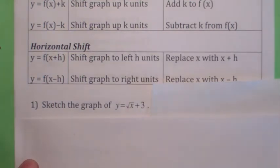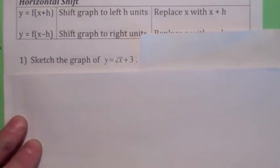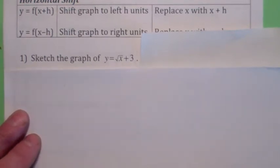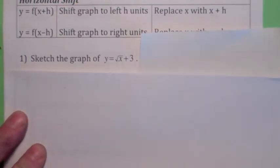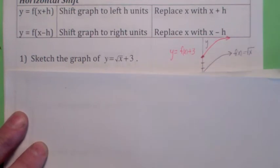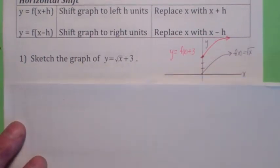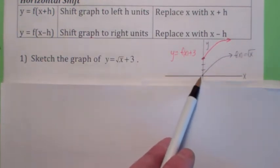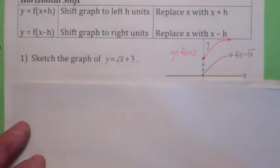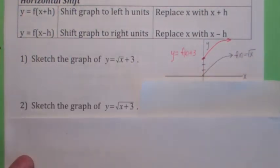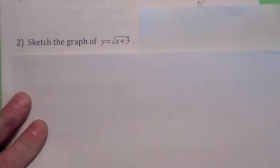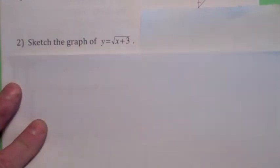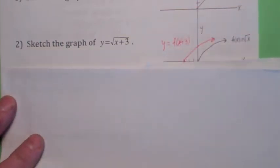Suppose you want to graph y equals the square root of x plus 3. Well, you're adding 3 to the y coordinate of f of x equals square root of x. You're literally adding 3 to each of the y coordinates of the square root function. For example, the point (0, 0) — if you add 3 to the y coordinate, it becomes (0, 3). Don't get that confused with square root of x plus 3, where you're replacing x with x plus 3. That's a horizontal shift 3 units to the left.